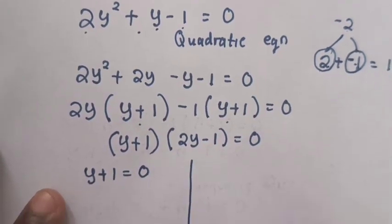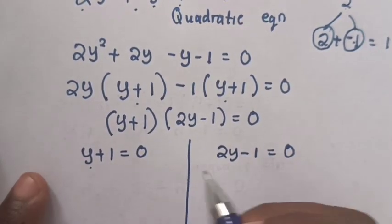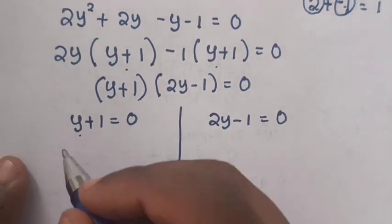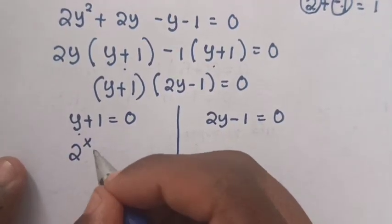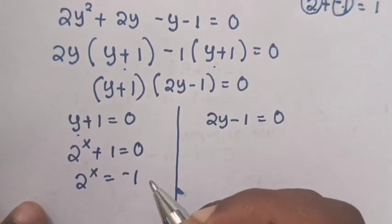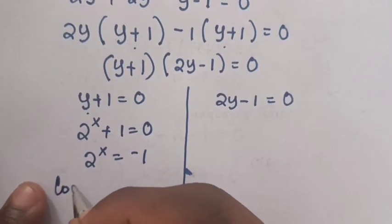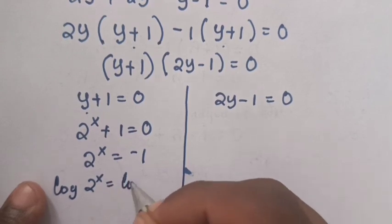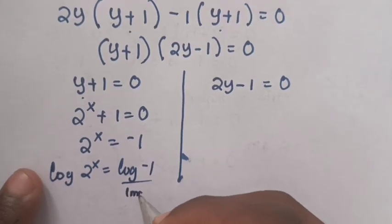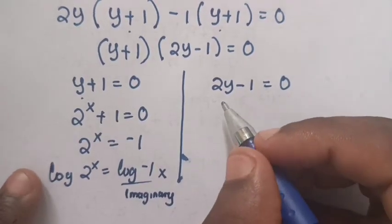Solving for y: y plus 1 equals 0 and 2y minus 1 equals 0. Since y equals 2 power x, the first case gives 2 power x equals negative 1. Applying log to both sides, this result is imaginary, so there is no solution for this case.